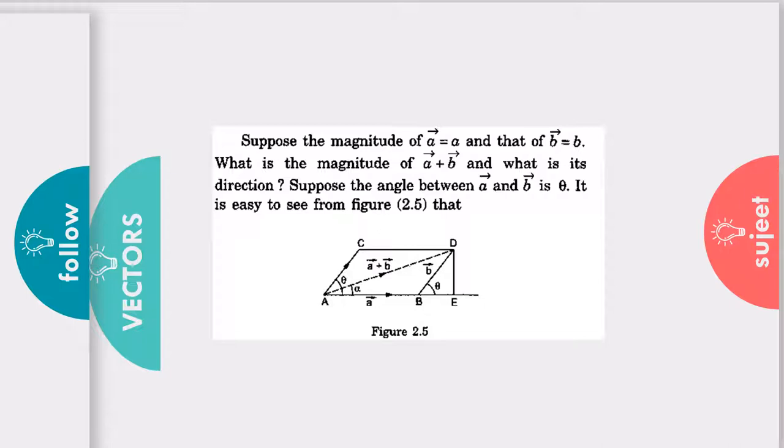the magnitude a, and another vector which is having the magnitude b. Then what is the magnitude of vector a plus vector b and what's its direction? Simply, it is asking about the resultant of the vector.